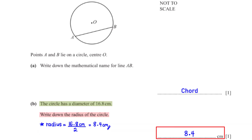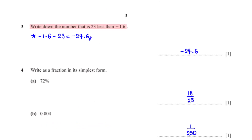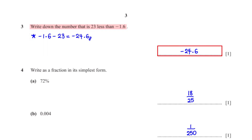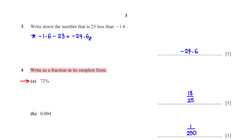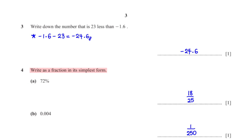Write down the number that is 23 less than negative 1.6. To get this number we simply subtract 23 from negative 1.6, which is equal to negative 24.6. Write as a fraction in its simplest form: 72%. When we type 72% into the calculator we get its simplified fraction, which is 18 over 25.